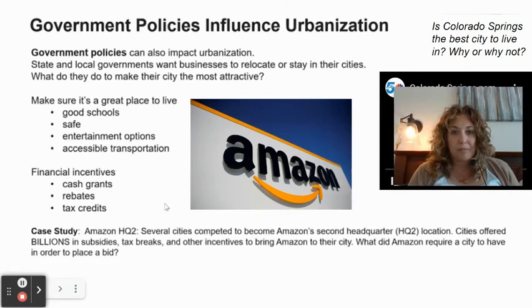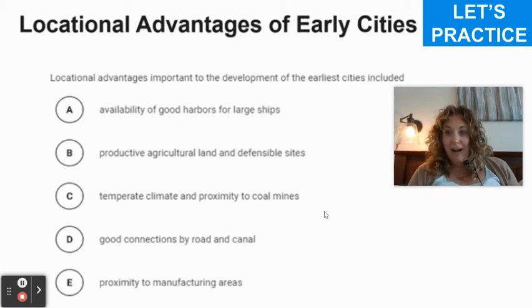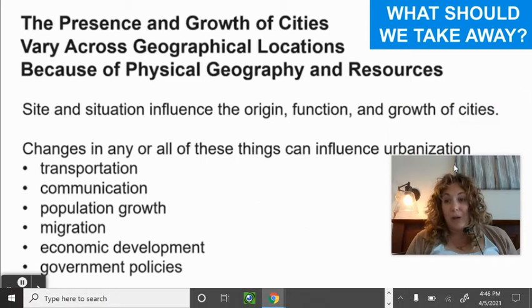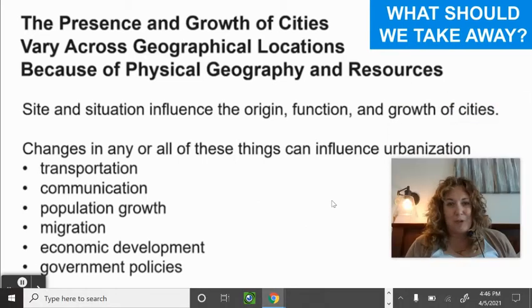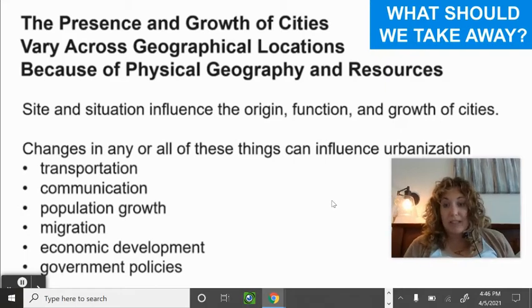The presence and growth of cities varies across geographic locations because of physical geography and resources — this comes back to Unit 1's environmental determinism versus possibilism. Changes in any or all of these factors — transportation, communication, population growth, migration, economic development, and government policies — can either make your city grow or cause it to decline.